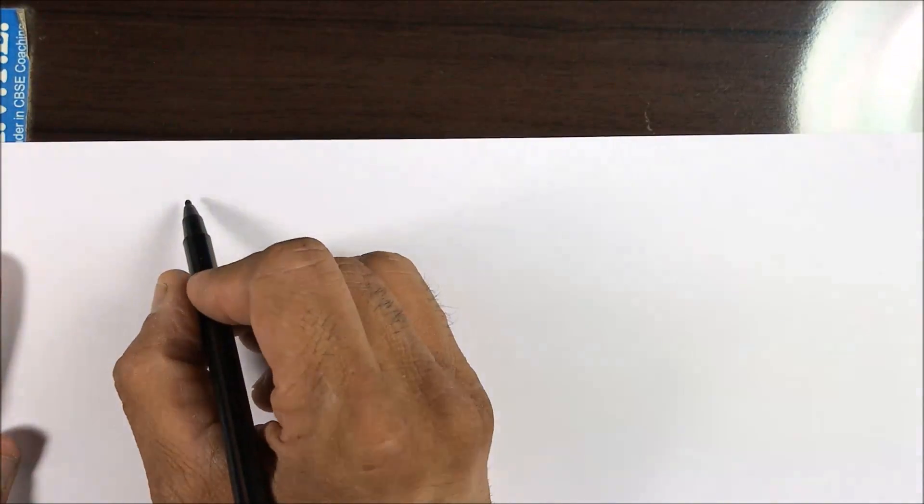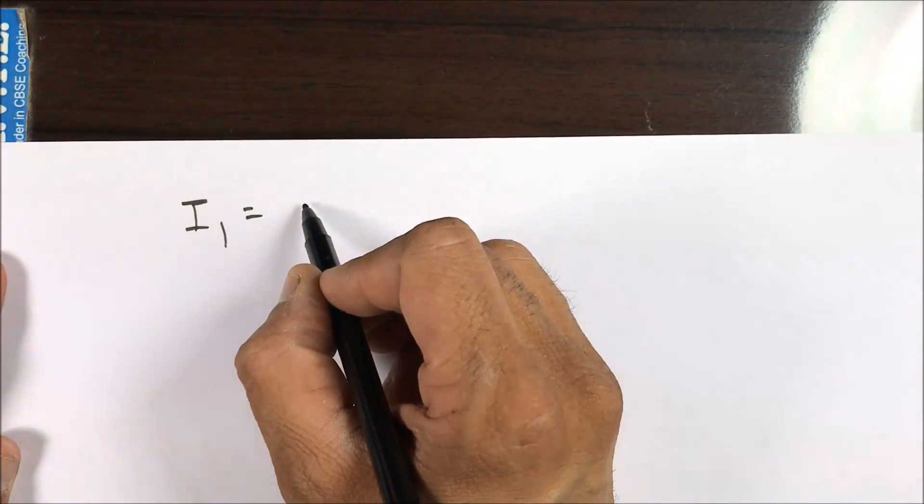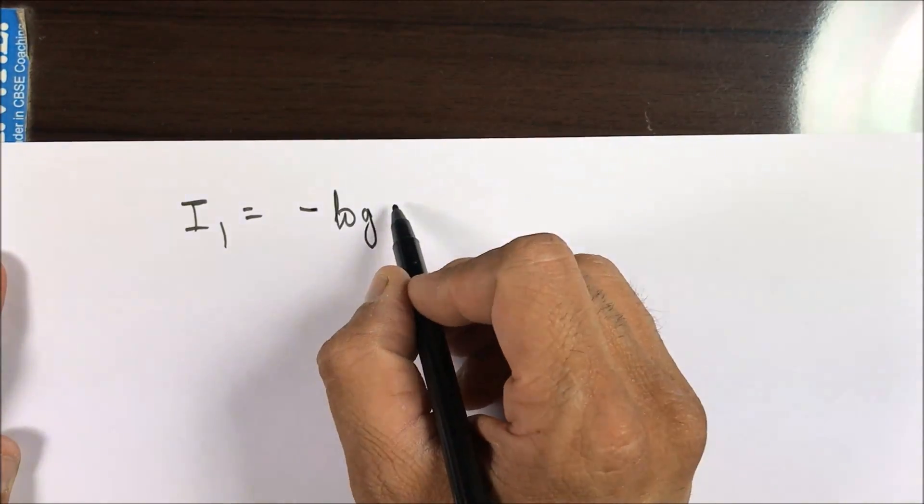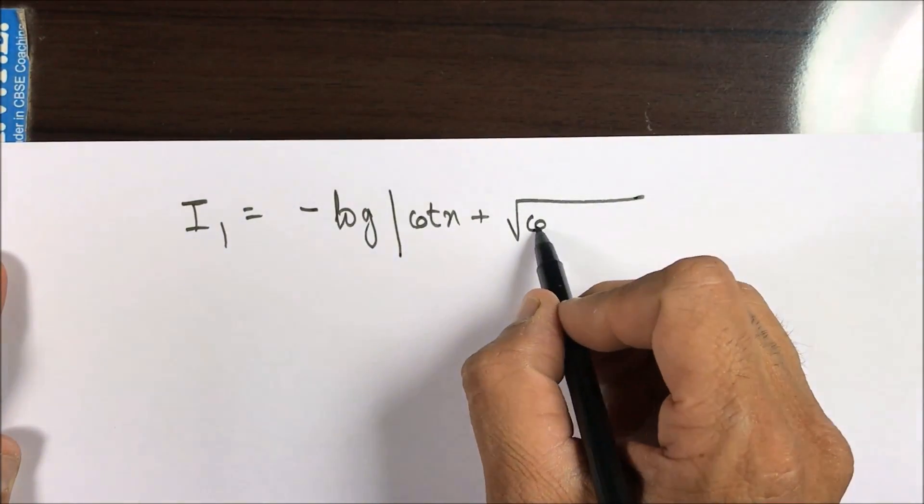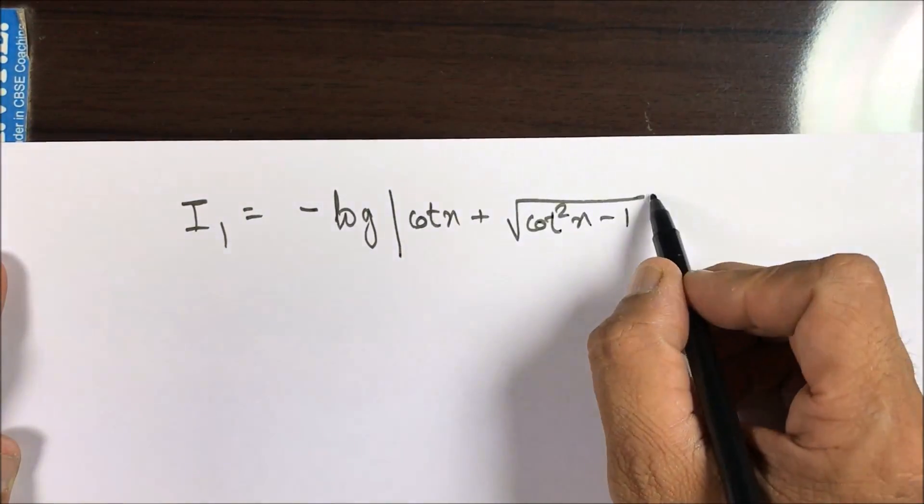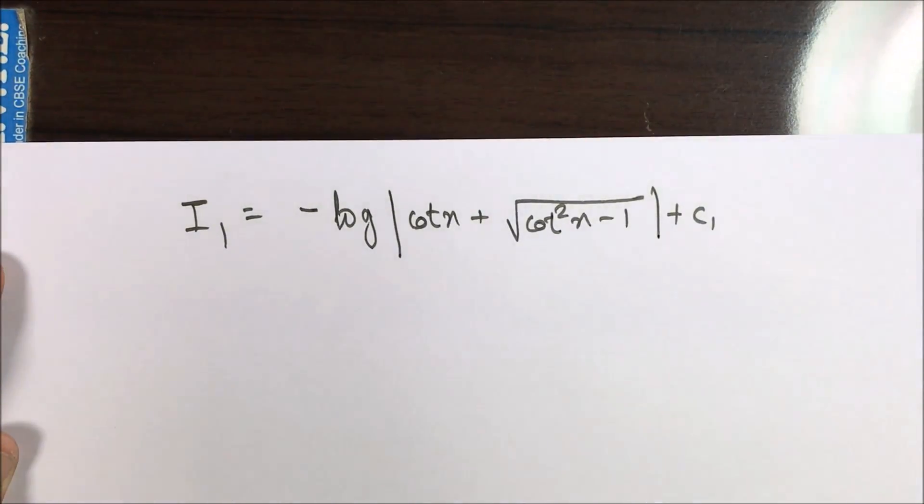Applying the special integration, which is minus log mod t plus under root of t square minus 1 plus c1. Which is I1 equals minus log cot x plus under root of cot square x minus 1 plus c1, because one has to write the answer in x form.